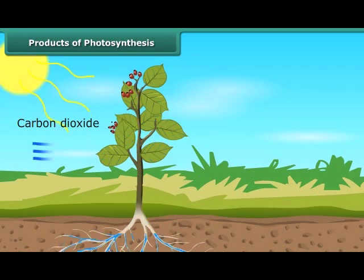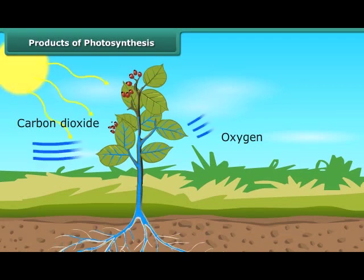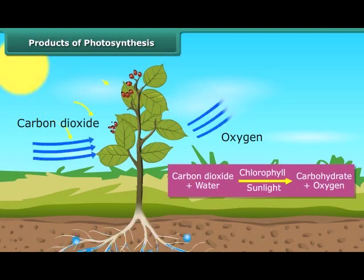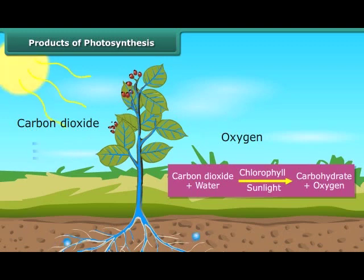Starch is also an example of carbohydrate. In this process, oxygen is also released. Therefore, the process of photosynthesis can be represented as: carbon dioxide plus water, in the presence of chlorophyll and sunlight, gives carbohydrate plus oxygen.